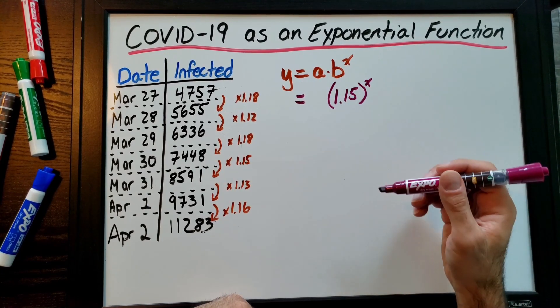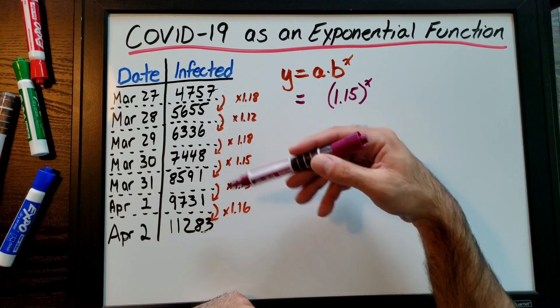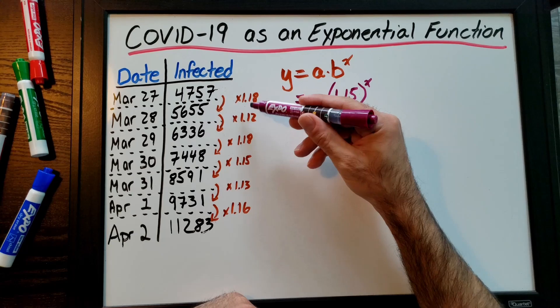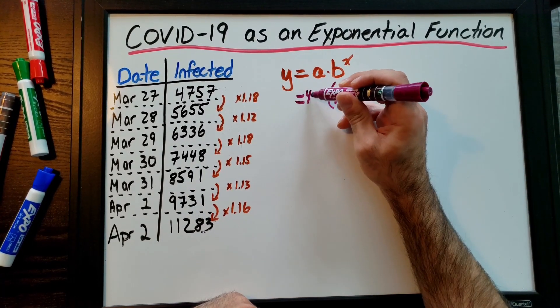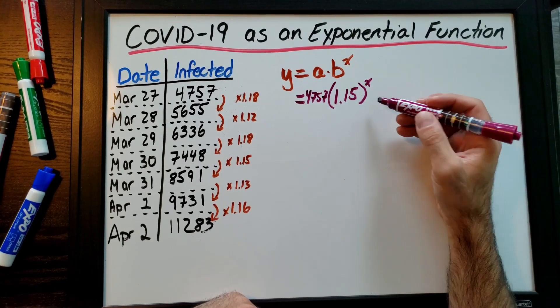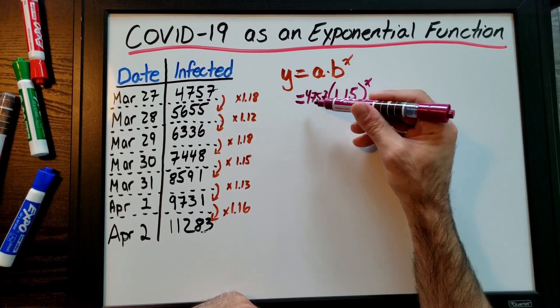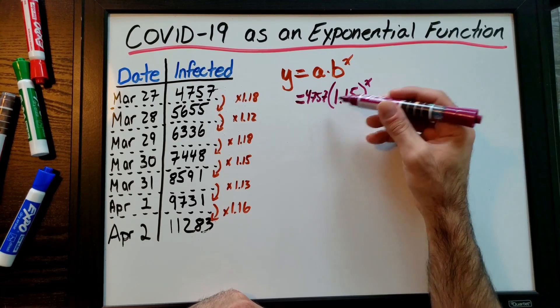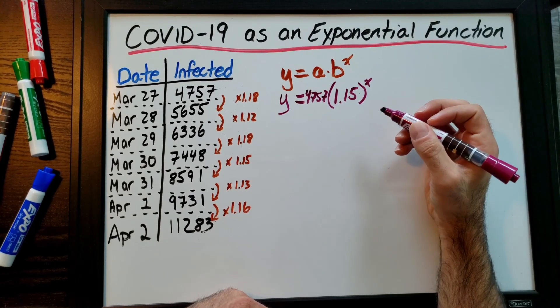Now what's my a value? My a value is wherever you start at. Technically at the beginning we start at one person, the first infected person, but because I'm going to use these numbers I'm going to start at 4,757. This is actually similar to the compound interest formula where this is your interest rate, let's say you're getting 15% interest and you start with 4,757 dollars. This is how compound interest is calculated.